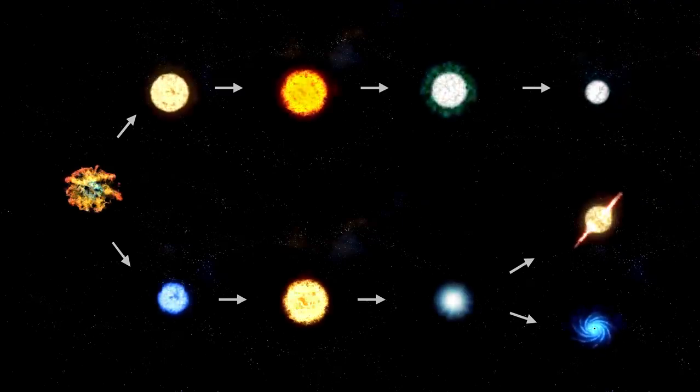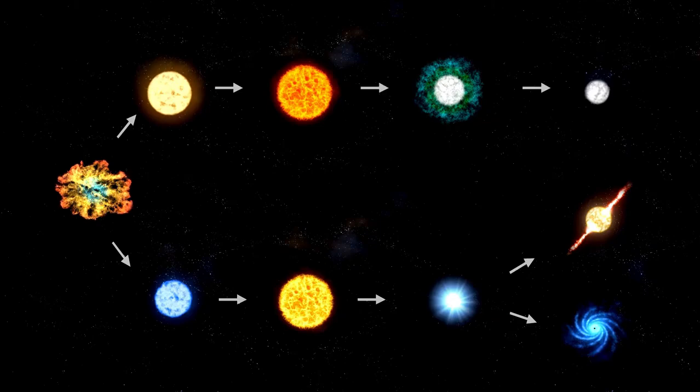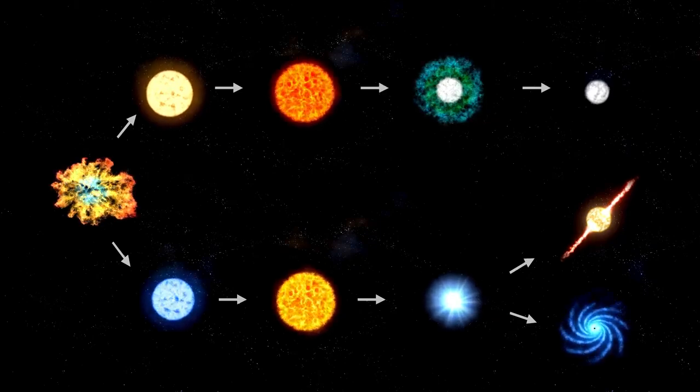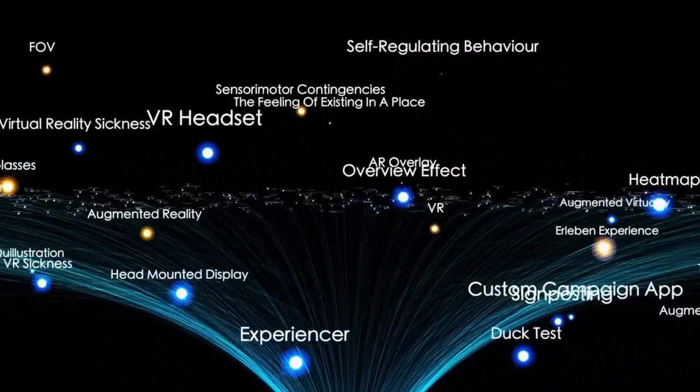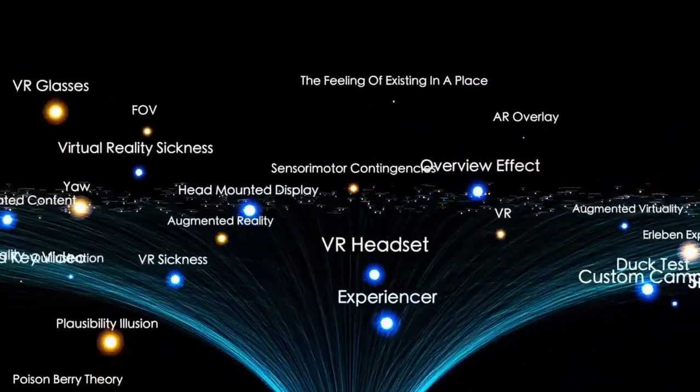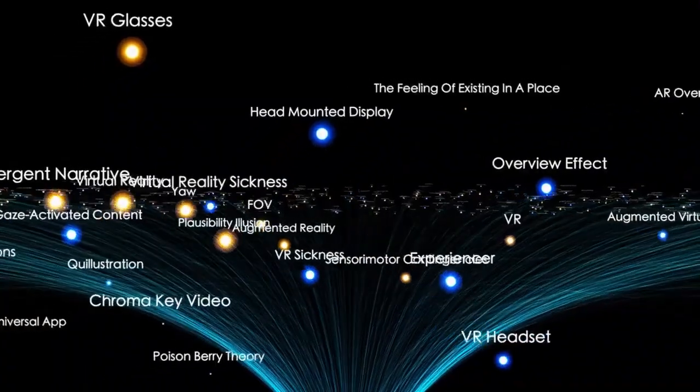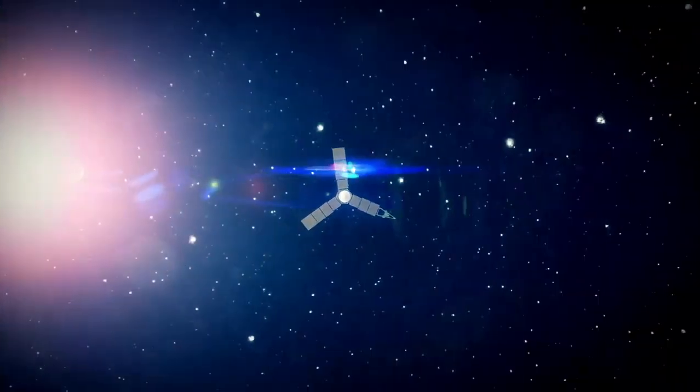But there is more. The 93 billion light-years represents only what we can currently observe of the universe, just a fraction of what our instruments and technologies allow us to see. Scientists believe the entire universe could be a staggering 250 times larger than what we can perceive, meaning it might have a diameter of at least 7 trillion light-years.